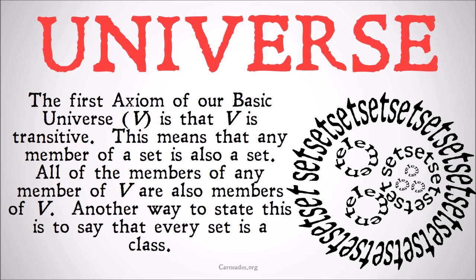Another way to state this is to say that every set is a class. This is the claim we hadn't proven up till now — we had just stated it and said we were going to get to it eventually. If every set has as its only members other sets, and all sets are members of V, that means all sets are subsets of V. A subset of V is a class — classes are defined as subsets of V. All sets have as their members only members of V, so all sets are subclasses of V, and therefore all sets are classes.